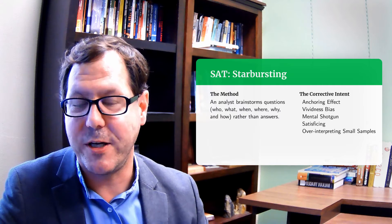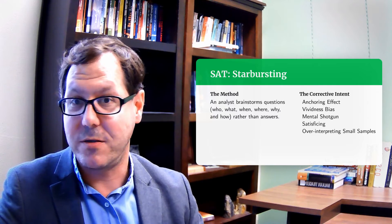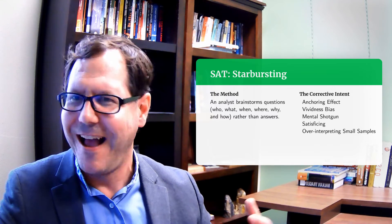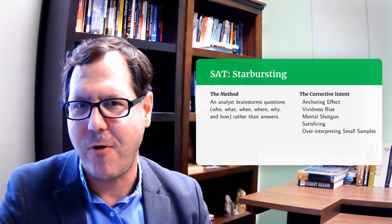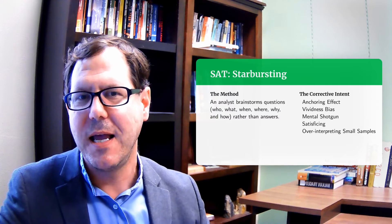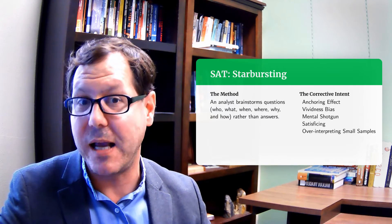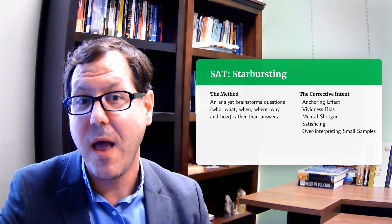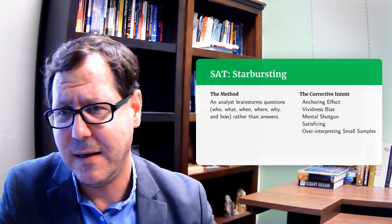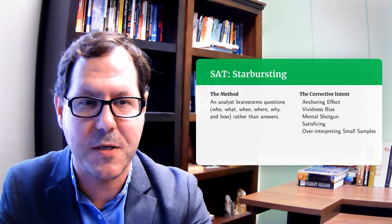We could use star bursting, which is structured brainstorming around questions, not answers. Who, what, why, when, where, and how. What do I know? Why is this happening? How did this occur? Where and when did this information get generated? Building these questions forces you to work through the information from different perspectives and recognize gaps in what you don't know, helping you work with information more efficiently.